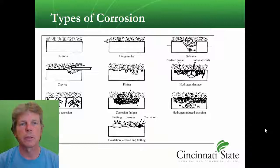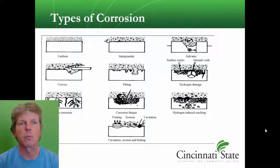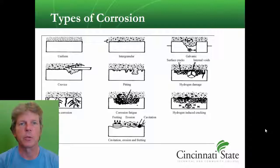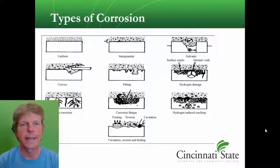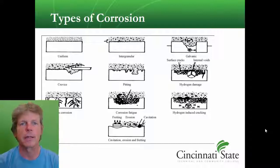Here is a quick sheet on all the different types of corrosion and what they look like, and a little bit on how they form. Hope this has been helpful for you. More information, of course, is always in the textbooks, on the FAA website, and in the AC43.13.